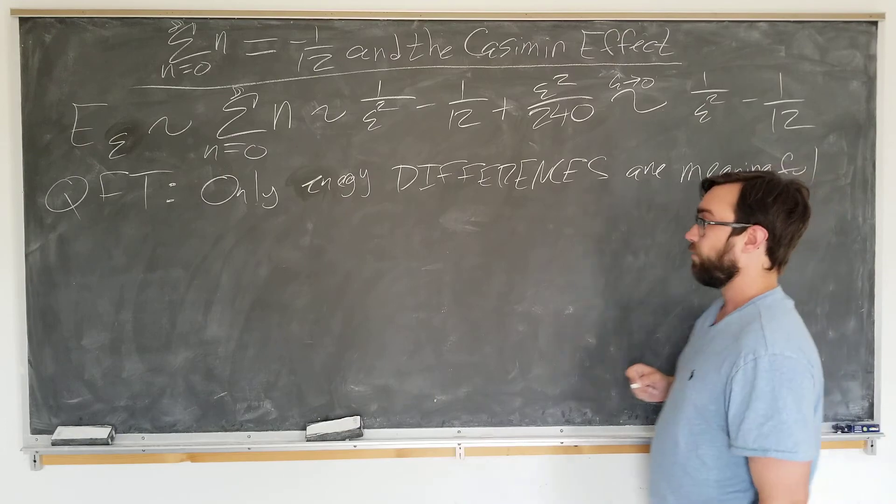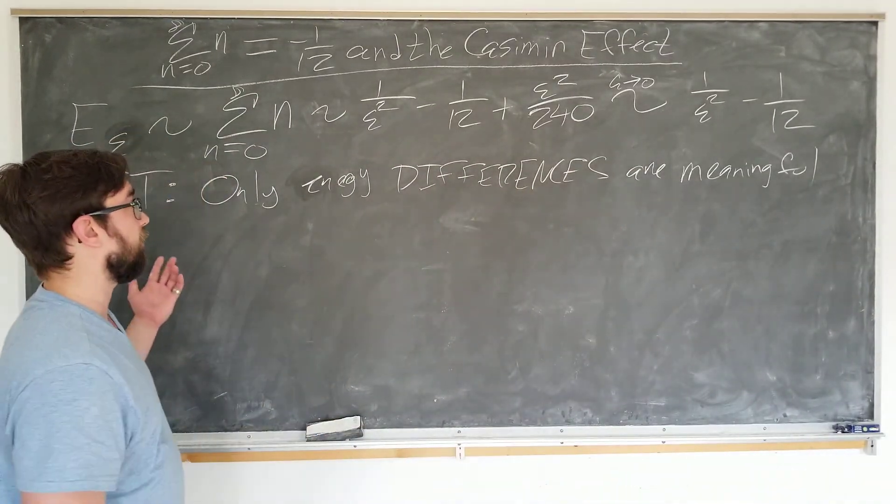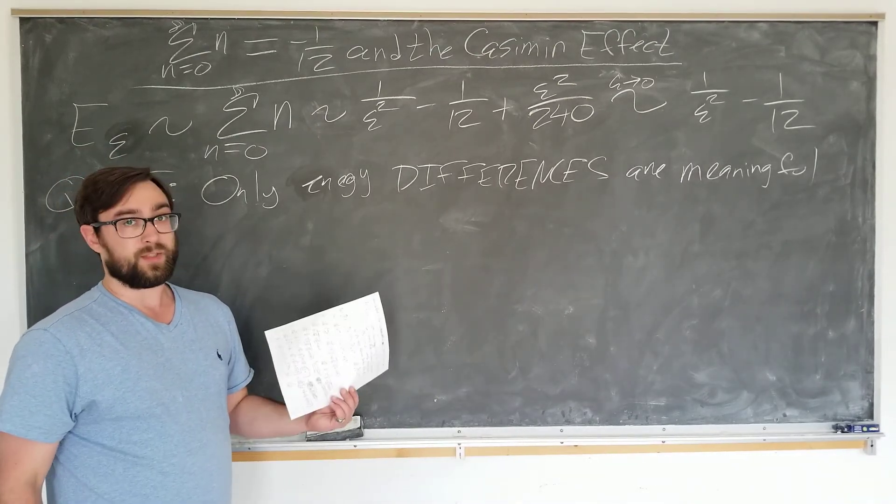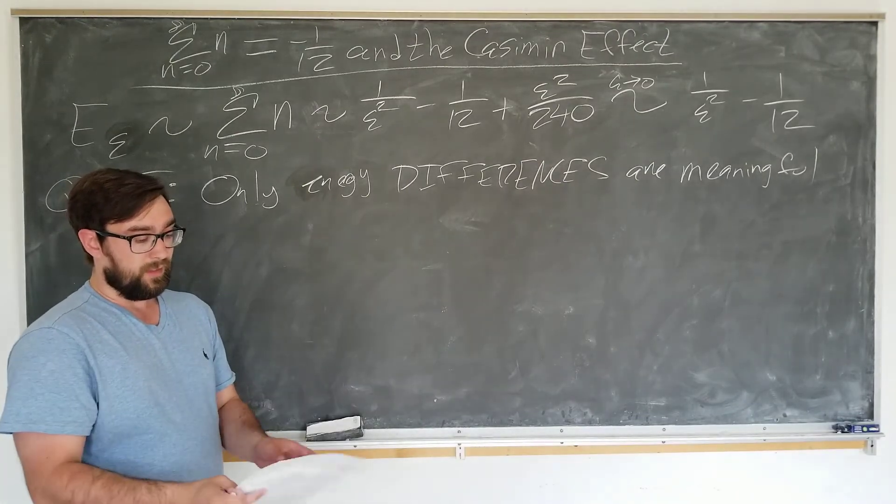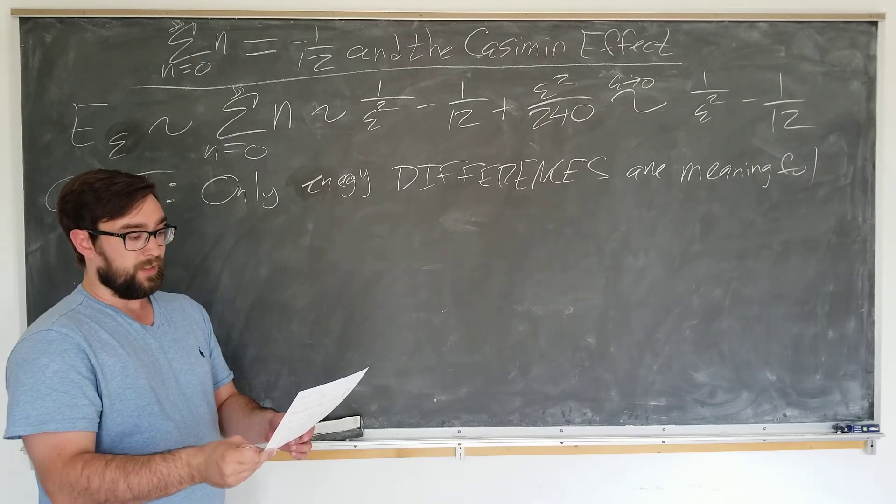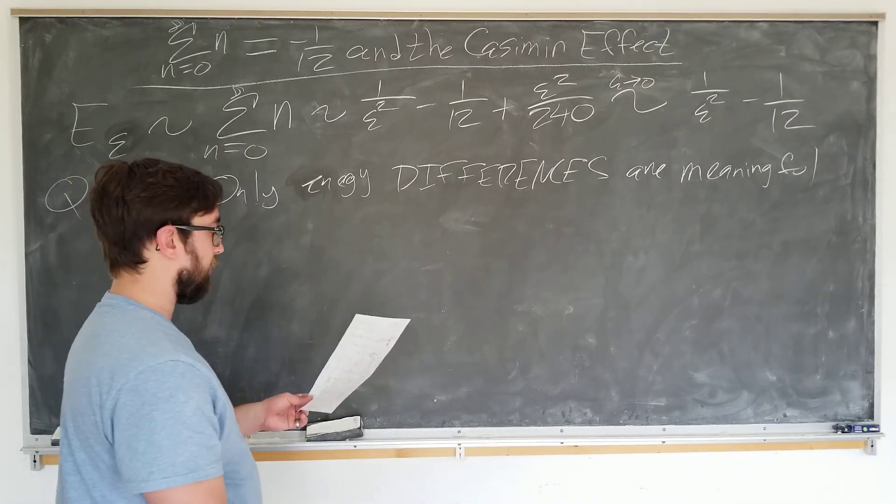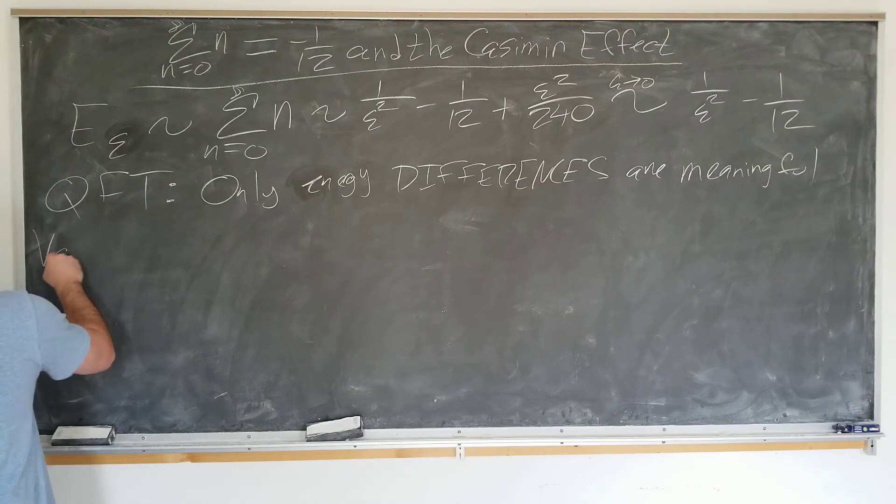Well, what other energy do we have to compare this to? I mean, as far as we know here, we just have the two parallel plates. Nothing else in the scene. Well, there is something else. The vacuum is still around. And in quantum field theory, the vacuum also has energy. And it's actually quite large. Infinite actually. So we have this vacuum energy.